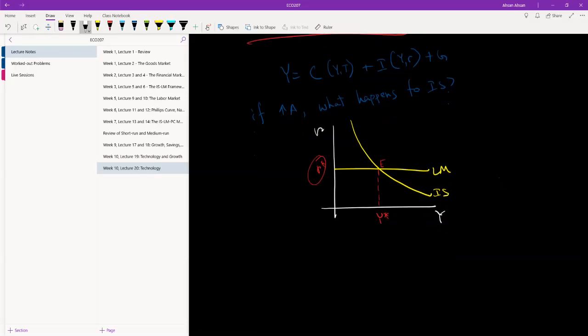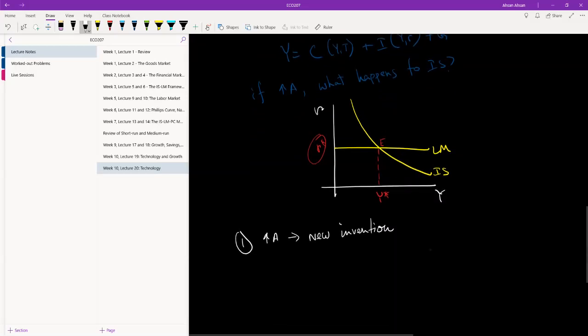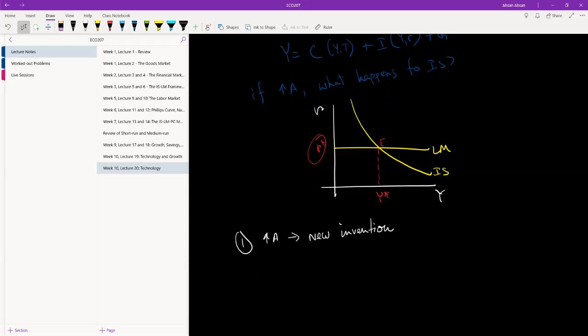We have Y star and technological progress. The technology available in the economy has improved. What will happen to the IS curve? We know nothing is going to happen to the LM curve. LM is basically the interest rate which is set by the central bank. Let's assume central bank isn't really doing anything, they'll keep the interest rate fixed. What is going to happen to IS? The answer is that two things can happen.